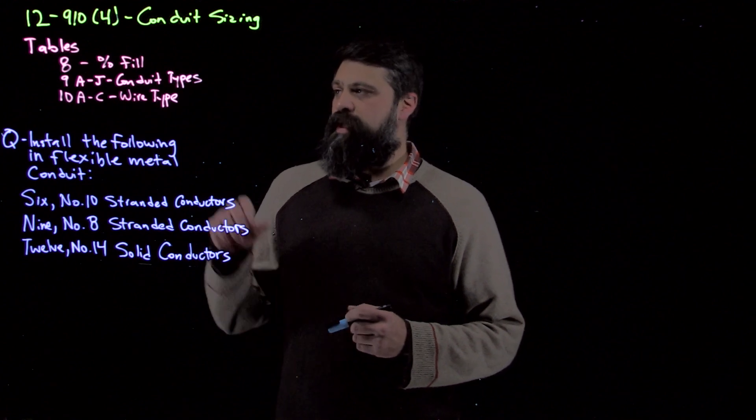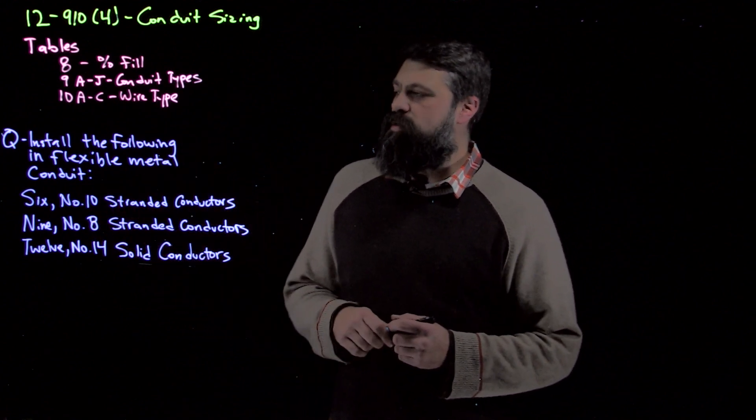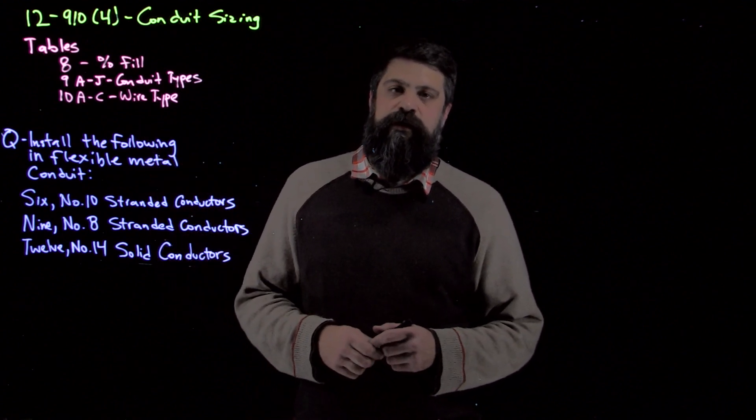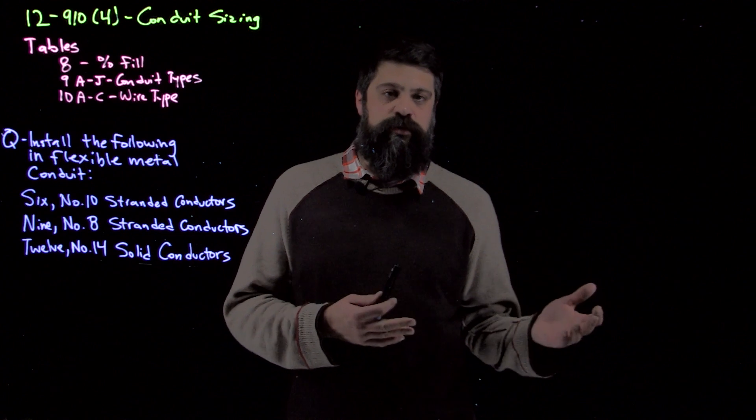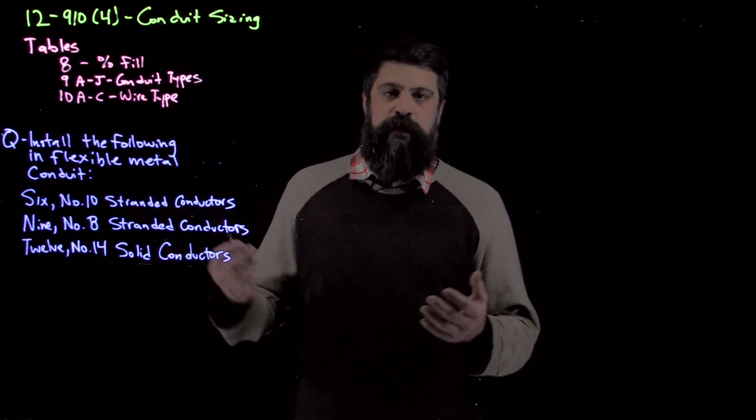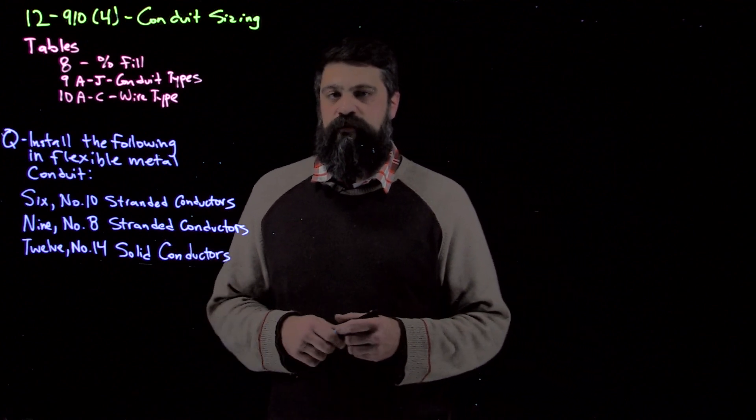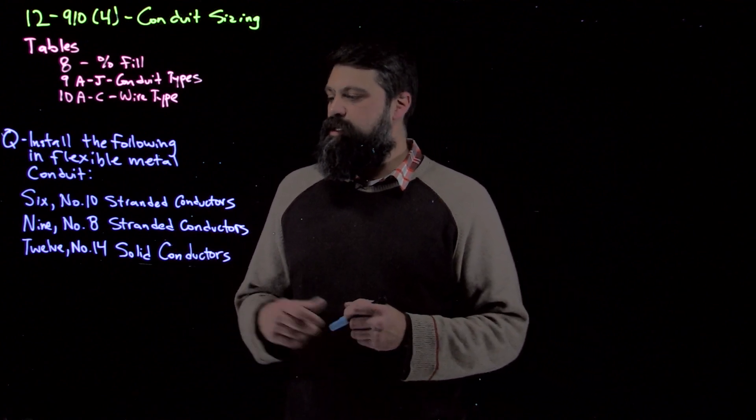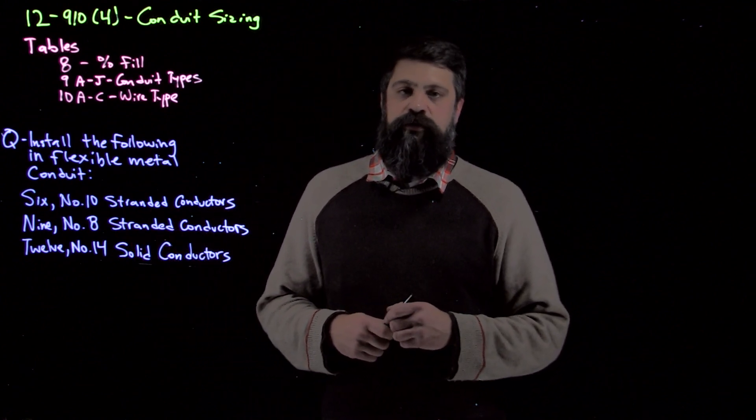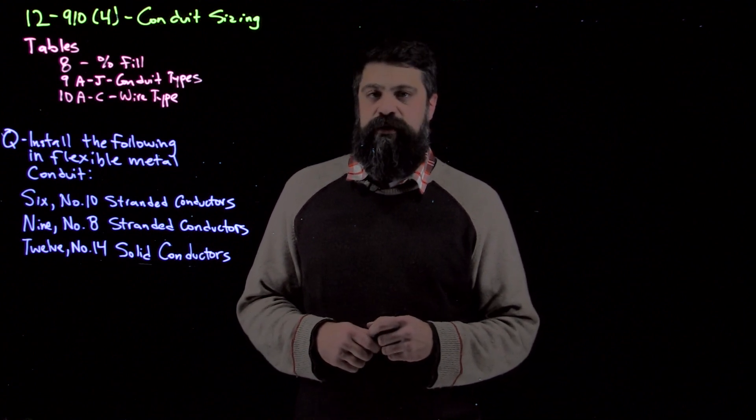We're going to size some conduit based on having different types of wire inside of the conduit. So that's going to take me through these tables. Table 8 gives me a percentage fill. Tables 9A through J shows me some different conduit types, as well as tables 10A through C gives me a wire type. So I have stranded conductors and I have solid conductors that we're generally using for the examples that we've had so far. So in this question I have some stranded and I have some solid. Let's go through and take a look at what we can do to actually install these in some conduit.